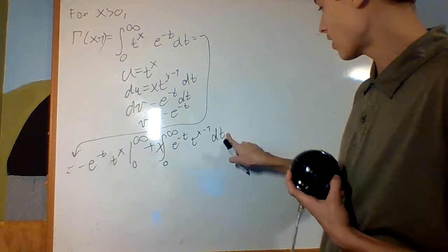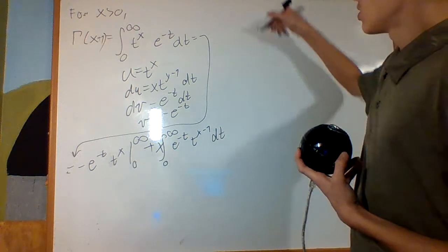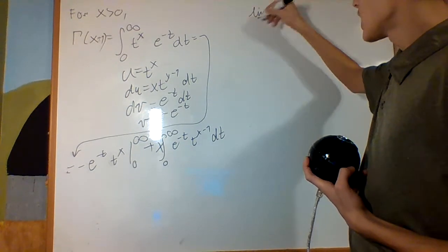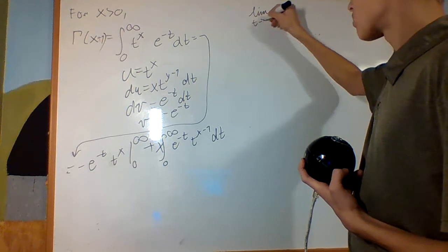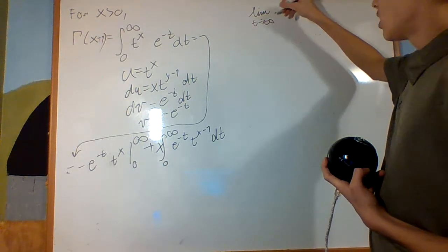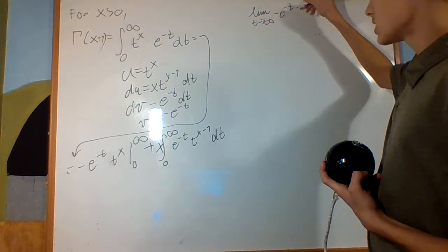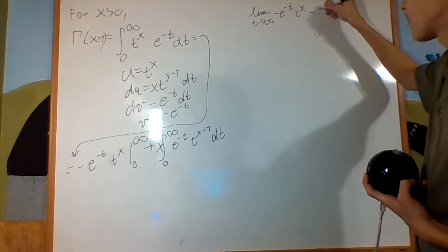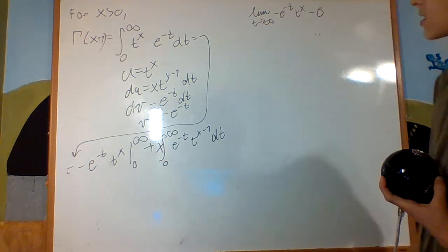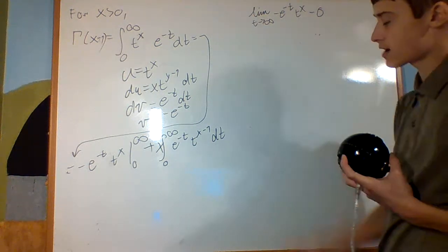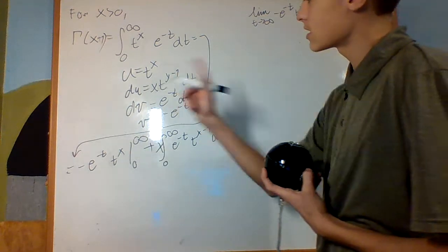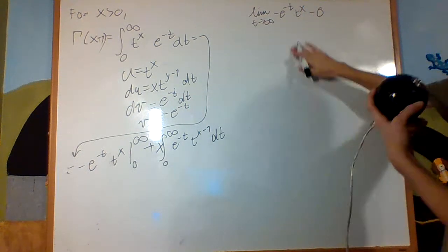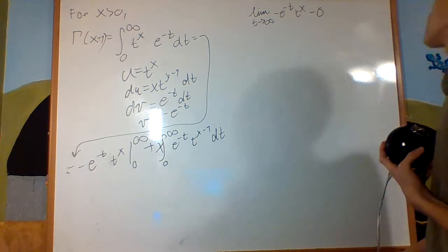Let's evaluate the boundary term. That's going to be the limit as t approaches infinity of negative e to the negative t times t to the x, minus the value at 0. Because 0 to the x is 0, e to the negative 0 is 1, and 0 times 1 is 0. So the lower bound contributes 0.